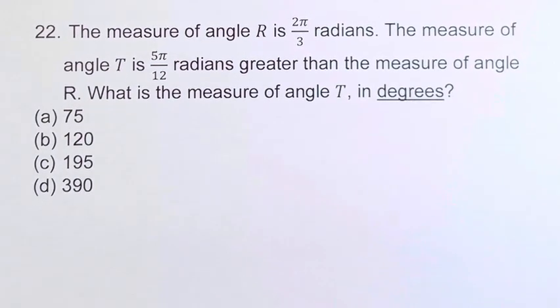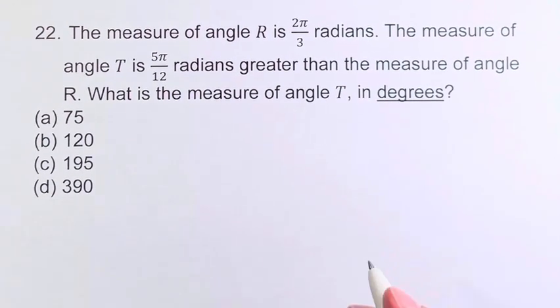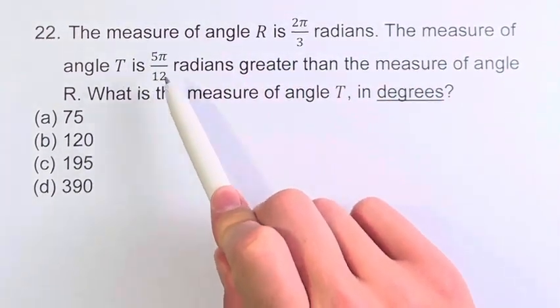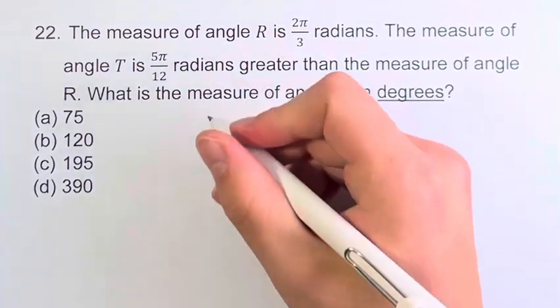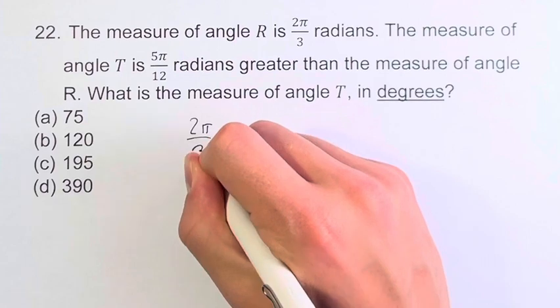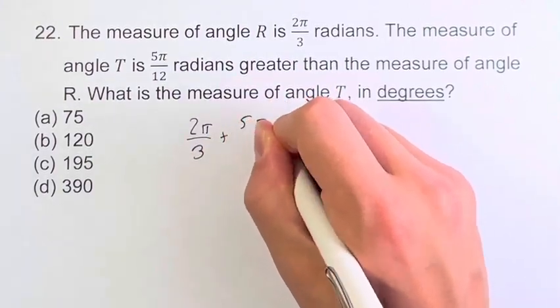Before we worry about degrees, let's find out what is the measure of angle T in radians. We're told that it's 5π over 12 greater than angle R, which is 2π over 3. So it's 2π over 3 plus an additional 5π over 12.